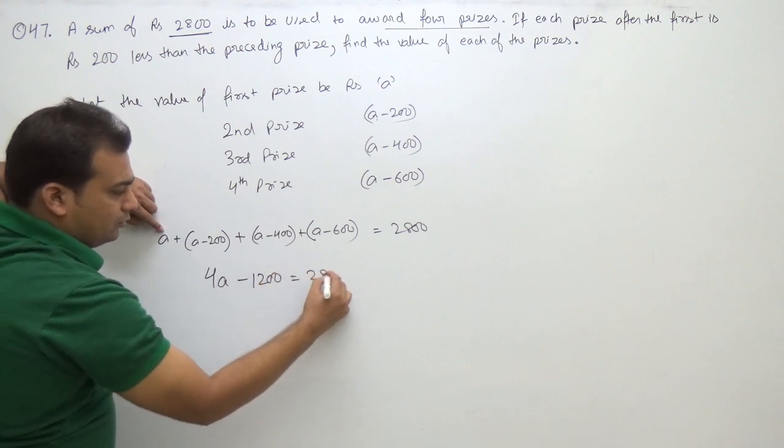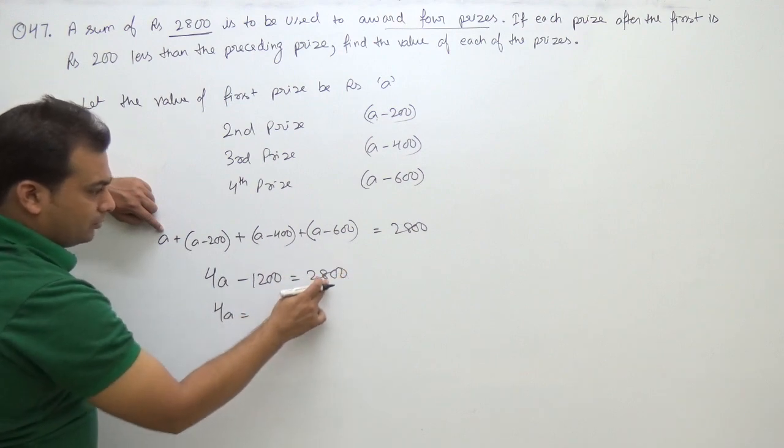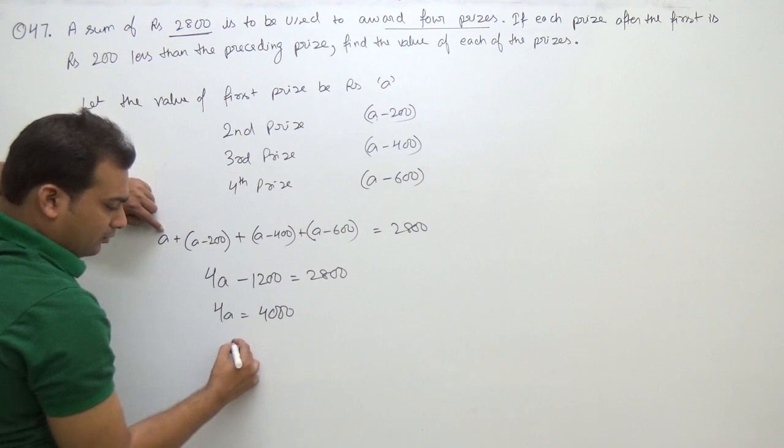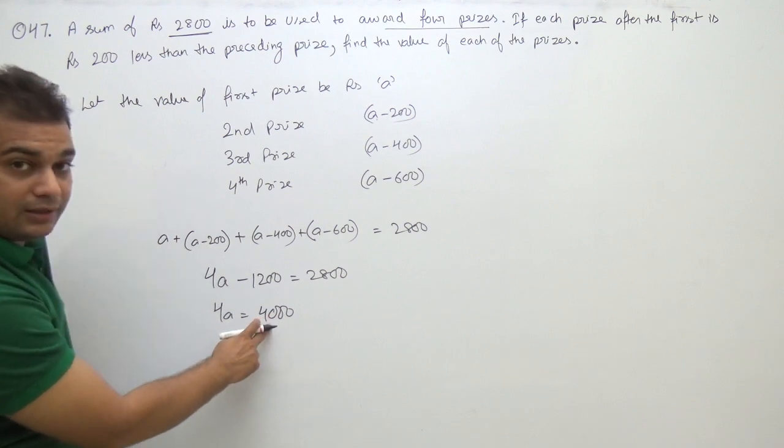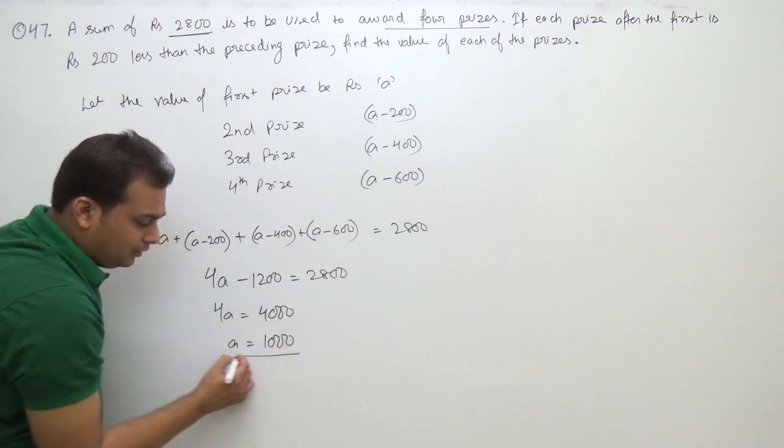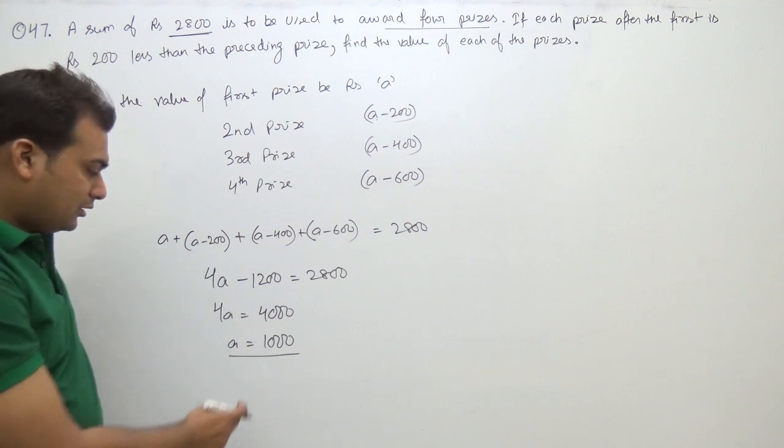So 4A equals 2800 plus 1200, which gives us 4000. Therefore A equals 4000 divided by 4, which equals 1000. The value of A is 1000, which we assumed to be the first prize.